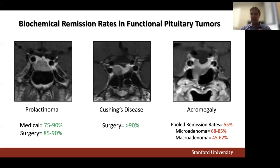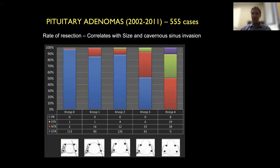Looking at overall remission rates for functional pituitary tumors based on published studies: prolactinomas are relatively good, though it depends on case selection. Cushing's disease is around 90%. Acromegaly has traditionally been poor — only about 50-60% remission — because these tumors are Pit-1 positive and invade the cavernous sinus more. Resection rates correlate very much with tumor size, but even more so with cavernous sinus invasion. The more invasive the tumor, the lower the resection rate.